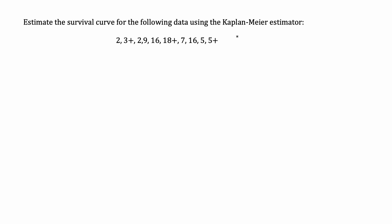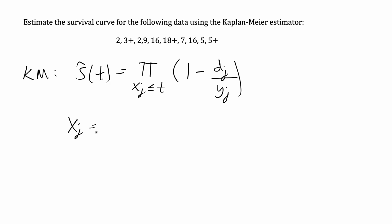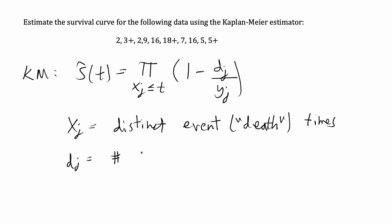The Kaplan-Meier estimator for doing an empirical estimation of the survival function at time t is equal to the product over xj less than or equal to t of 1 minus dj over yj. I'm going to define xj as the distinct event times — or if you're thinking of this as survival versus death, the distinct death times. dj is the number of death or event occurrences at xj.